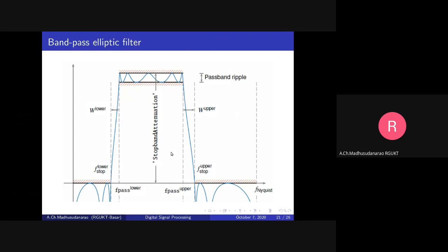Let's discuss one more thing. In our design, we may need to modify the stopband cutoff frequency. Suppose specifications FP1, FP2, Delta P, FS1, FS2, and Delta S are given. Due to rounding — for example, rounding N from 3.124 to a whole number — we will try to retain the same FP1 and FP2 but modify either FS1 or FS2. Suppose we want to modify FS1: we should try to increase FS1, making the transition band narrower. If we want to modify FS2, we should try to decrease FS2, also making the transition band narrower.